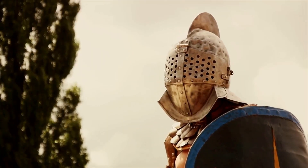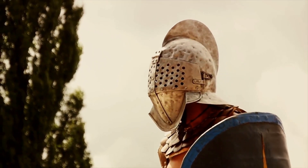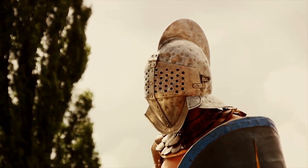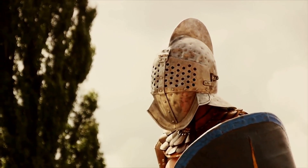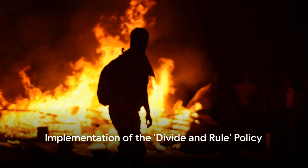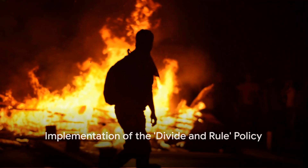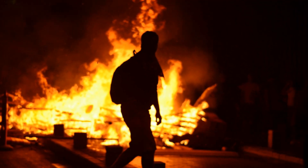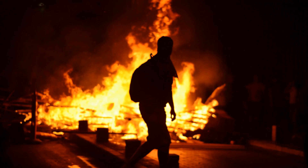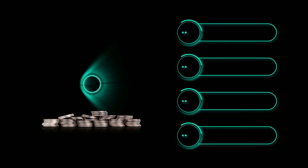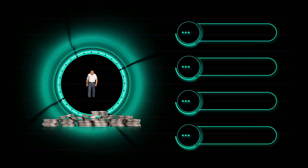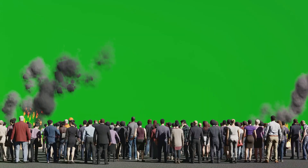This tactic finds its roots in the strategies of ancient empires and rulers, including the likes of Julius Caesar and Napoleon. The Divide and Rule Policy works by breaking up existing power structures, preventing alliances, and fostering discord. The aim is to weaken any potential opposition and strengthen the position of the elite.